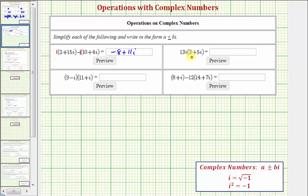Next we have 13i times the quantity 3 plus 5i. So 13i times the quantity 3 plus 5i. We'll distribute like we normally would, treating i as a variable, and then we'll simplify.